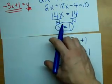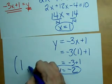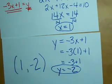So what we have now is that X is 1, Y is negative 2. And the point of intersection between these two lines is at 1, negative 2.